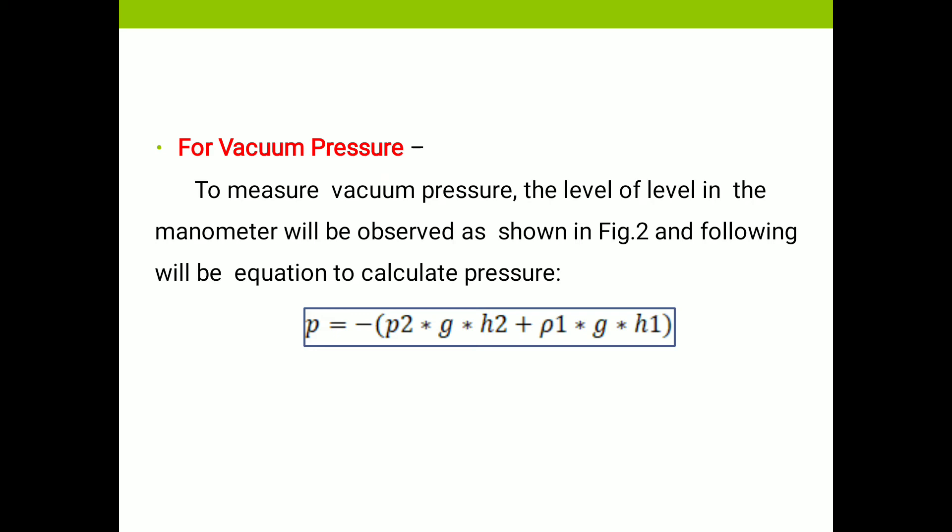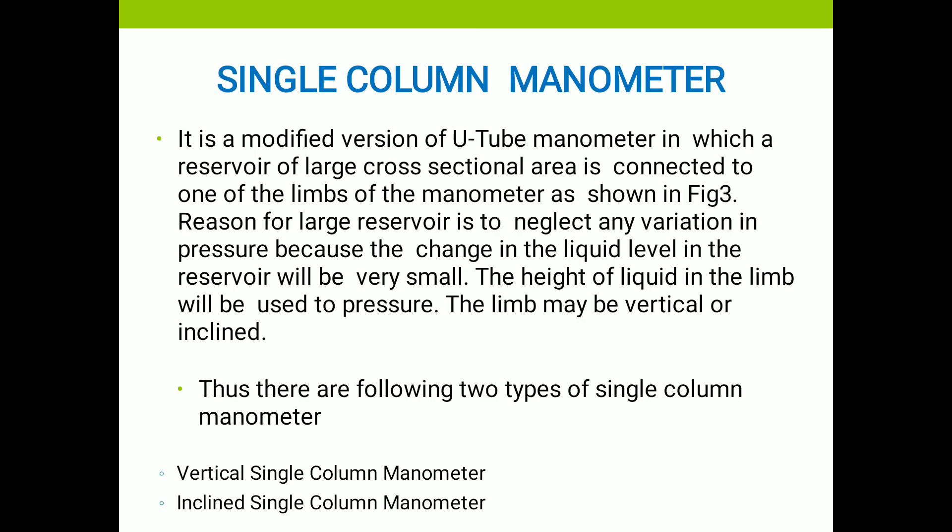Single column manometer — it is a modified version of the U-tube manometer in which a reservoir of large cross-sectional area is connected to one of the limbs of the manometer, as shown in figure number 3. The height of the liquid in the limb is used to measure the pressure, and the limb may be vertical or inclined. On this basis, this manometer is divided into two types: vertical single column manometer and inclined single column manometer.